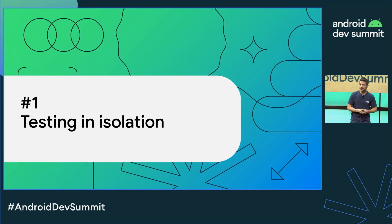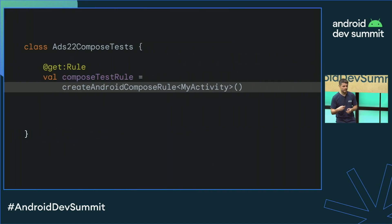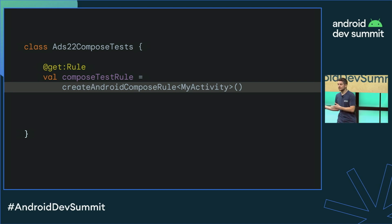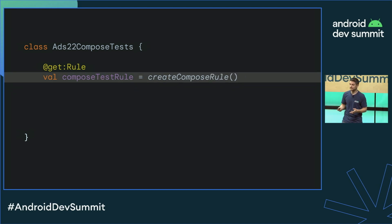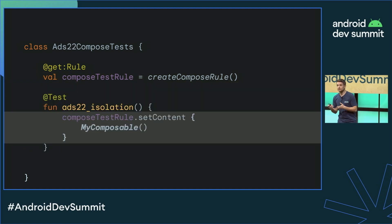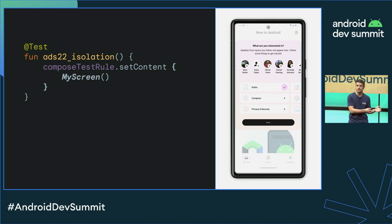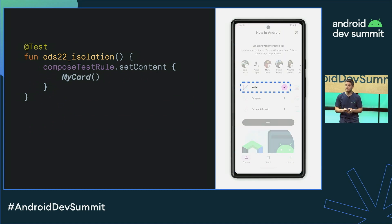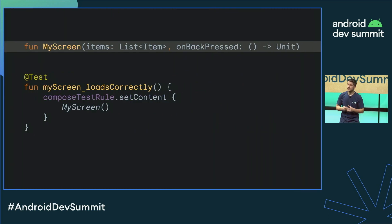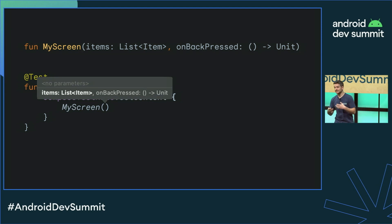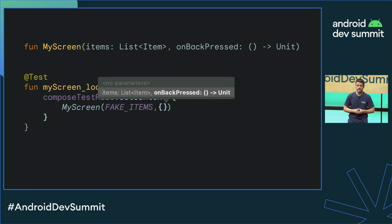Let's start with testing in isolation. When you create a Compose test, you can launch one of your activities like we've always done, or you can start an empty one and set the content yourself. That content is a Composable context, so it can be anything — a whole app, a single screen, part of a screen, or even the tiniest Composable. Because Compose is declarative, whenever you set content, that Composable tells you what it needs to render. In this example, a list of items and a callback, which is normally empty in tests. It's as easy as creating a preview.